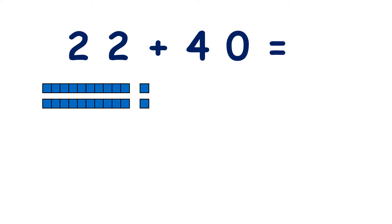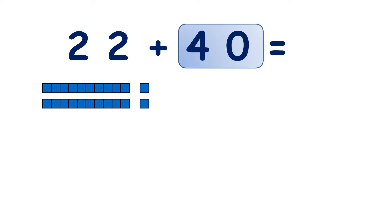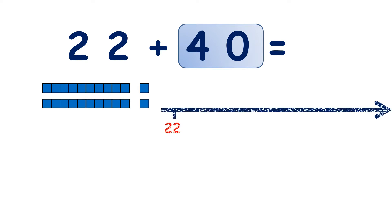Now we have 22 plus 40. So we start with 22, which is 2 tens and 2 units, and we want to add 40. So on a number line, we can start at 22. And we're adding 40, so how many tens are we adding? There are 4 tens in 40, so we can add 10 four times.